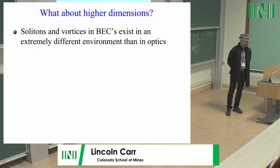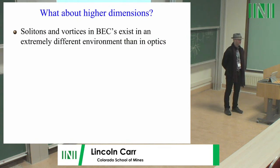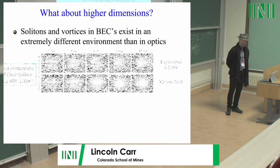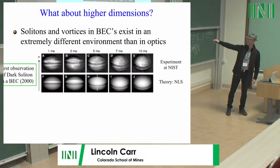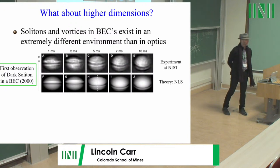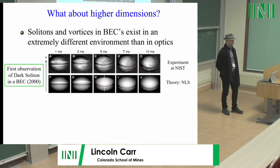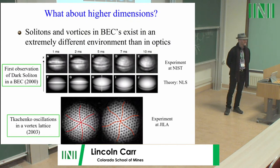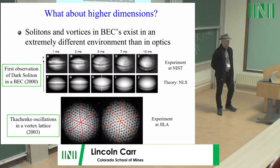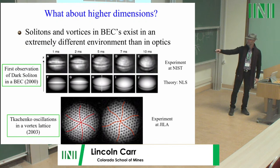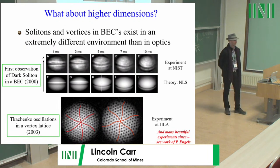Now what about higher dimensions? Solitons and vortices in Bose condensates exist in a very different environment than in optics — they're very 3D. Here's the first observation of a dark soliton done at NIST. You can see the soliton is a big notch driven in the middle; it runs down to the edge through a varying density and then turns into a couple of vortices on the end and breaks up. There was a very nice picture shown earlier by Peter Engels, who has made a lifetime habit of producing the most beautiful soliton pictures on Earth in Bose condensates. Here's a nice early example of Kuchenko oscillations in a vortex lattice, very much an ongoing field.